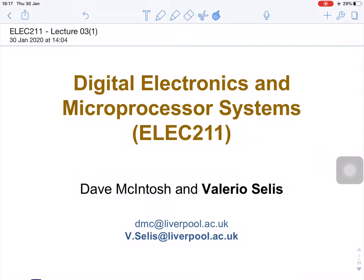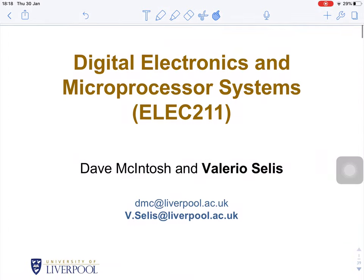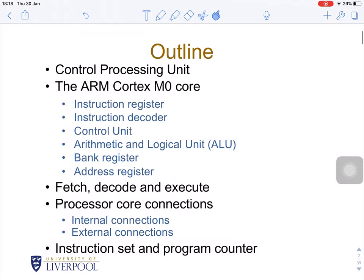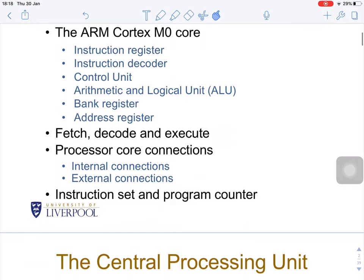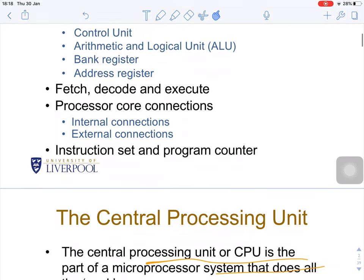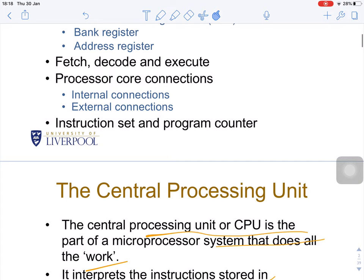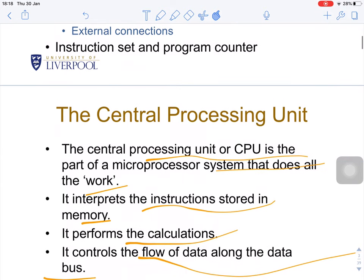Today we are going to talk about the digital electronic and microprocessor system, ELEC211, lecture 3. In this lecture, we are going to cover the control processing unit, the ARM Cortex-M0 core, the instruction register, the instruction decoder, the control unit, the arithmetic logic unit (ALU), the register bank, the address register, the fetch-decode-execute cycle, and the processor core connections — both internal and external connections.